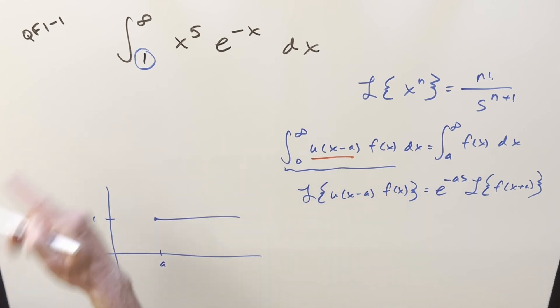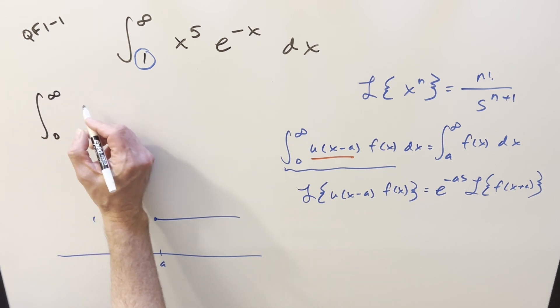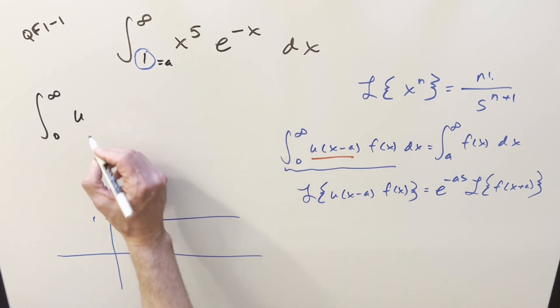So using this second formula here, what we'll do is, I'll just change this from 0 to infinity, insert this unit step function, where this a value is going to be this, so it's going to be starting at 1, so I'll write it as x minus 1.